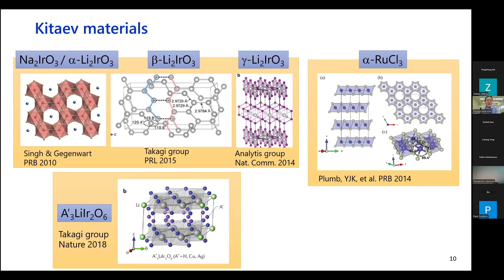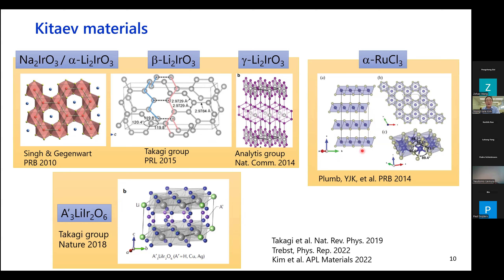This requires a special exchange interaction between edge-sharing octahedra. Jackeli and Khaliullin proposed that one way to realize this Kitaev exchange interaction is in materials with strong spin-orbit coupling. A good example they used is the iridates, where 5d electrons in t₂g levels with one unoccupied state, combined with strong spin-orbit coupling, give a half-filled effective j=1/2 state — a Kramers doublet — and when these octahedra share edges forming a honeycomb lattice, you achieve the Kitaev interaction.